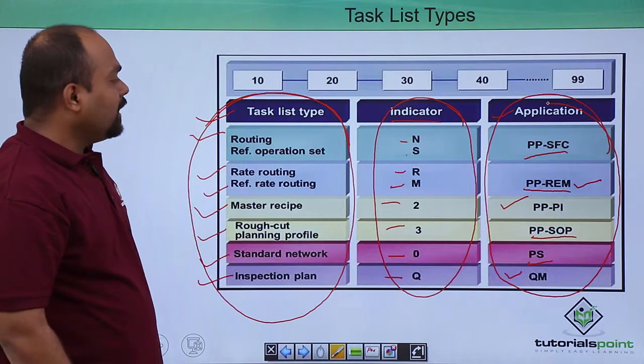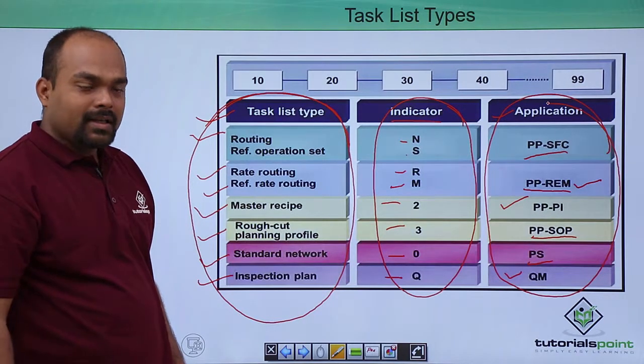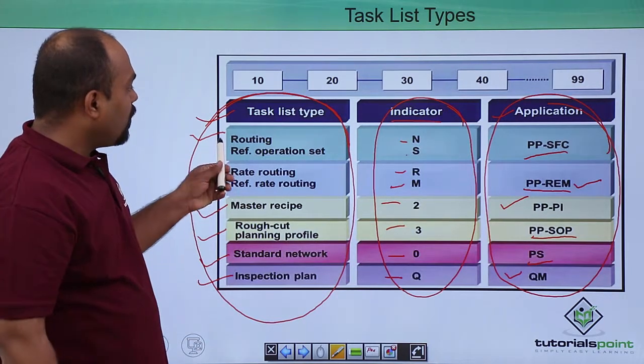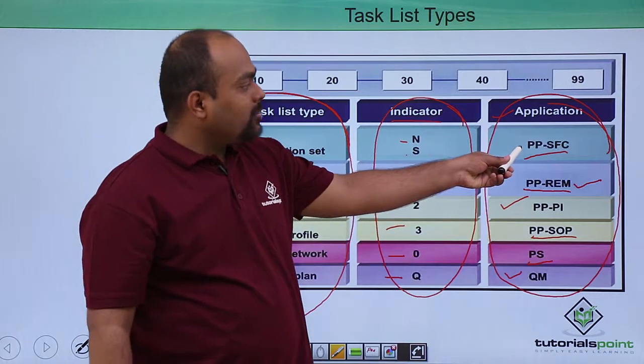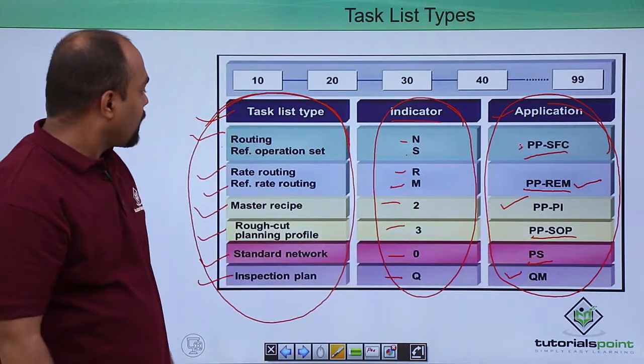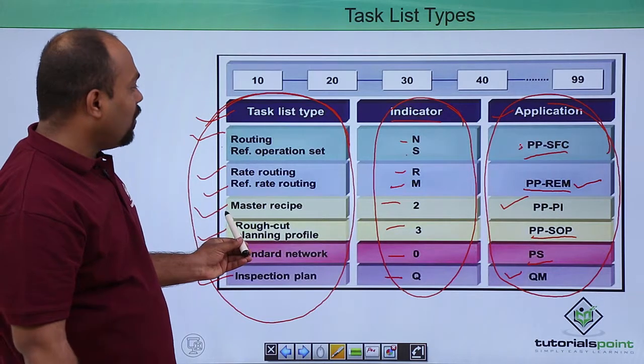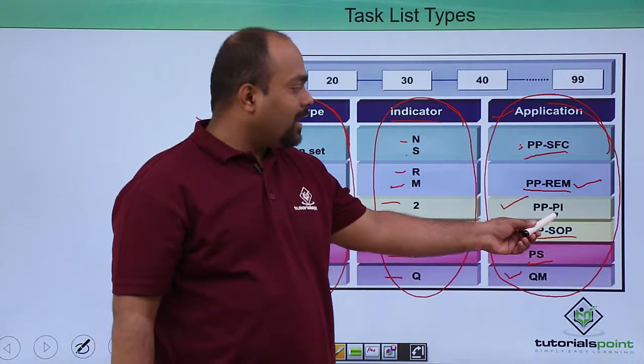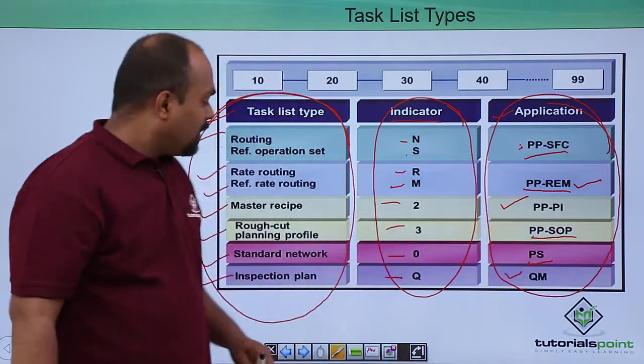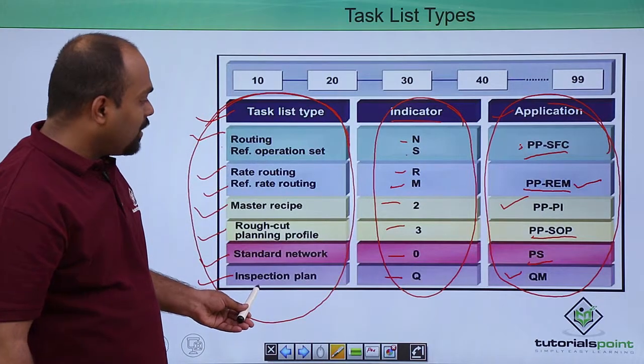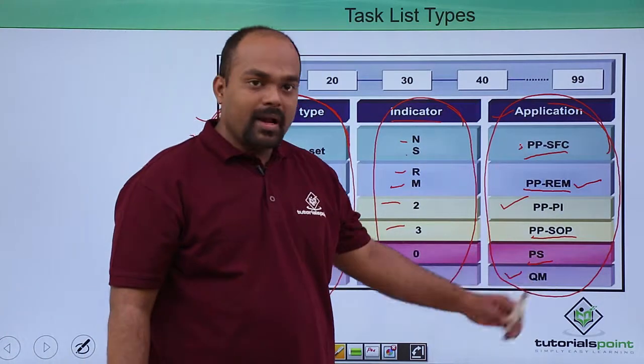Routing is for production planning shop floor control. Master recipe is for production planning and process industries. Inspection plan is for quality management.